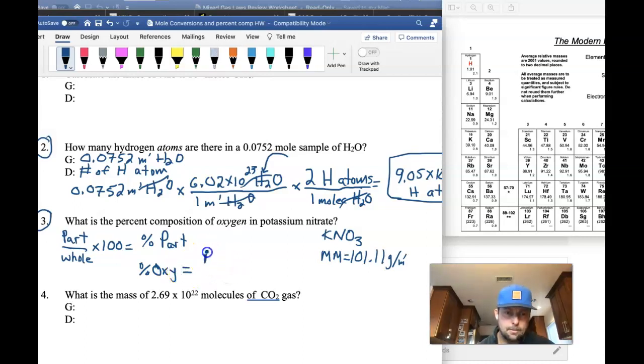Using our periodic table, if we looked up our molar mass, we get 101.11 for our formula mass of KNO3. And we just have to put the molar mass of all three oxygens in the top of this.